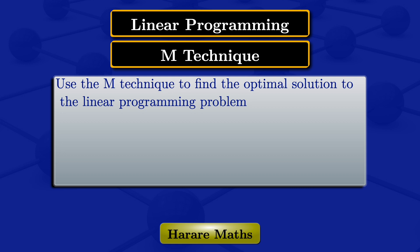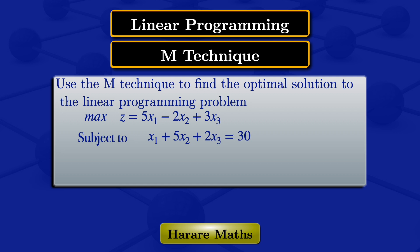In this video, I'm going to use the M technique to find the optimal solution to the linear programming problem. Maximize z equals 5x1 minus 2x2 plus 3x3, subject to the constraints: x1 plus 5x2 plus 2x3 equals 30, x1 plus 5x2 plus 6x3 is less than or equal to 40, and the variables x1, x2, x3 are greater than or equal to 0.